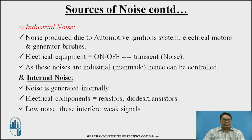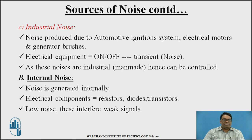Industrial noise is produced due to automotive ignition systems, electrical motors, and generator brushes. It also occurs due to electrical equipment turning on and off, and is therefore called transient noise. Since these noises are man-made, they can be controlled.